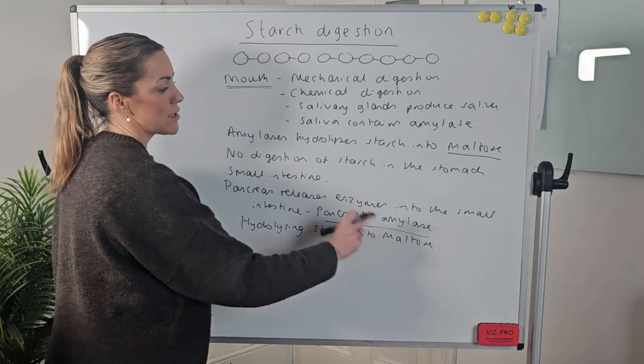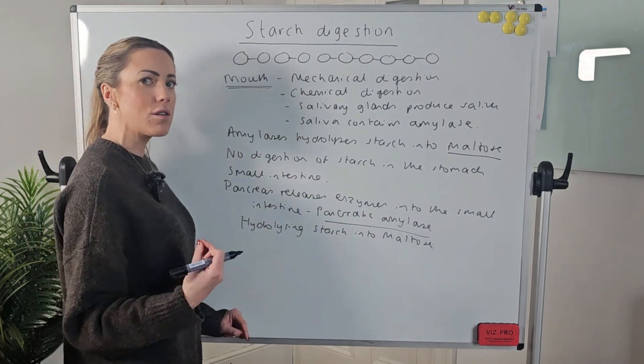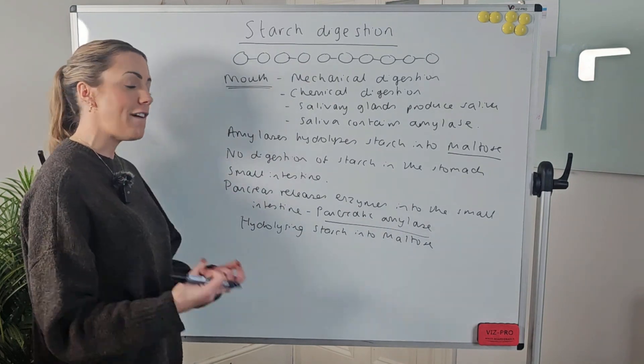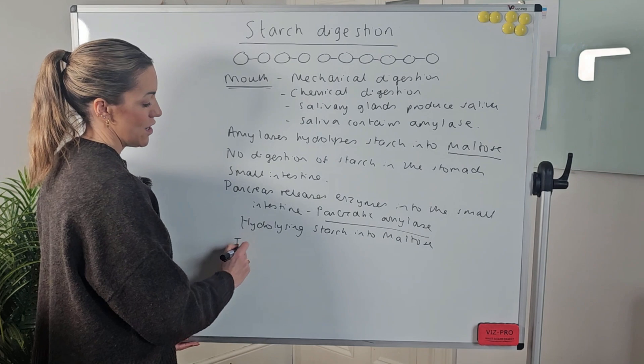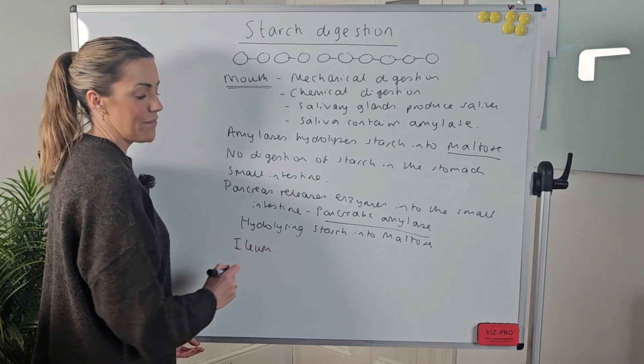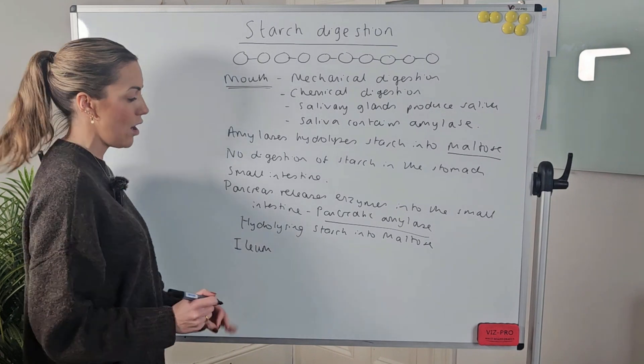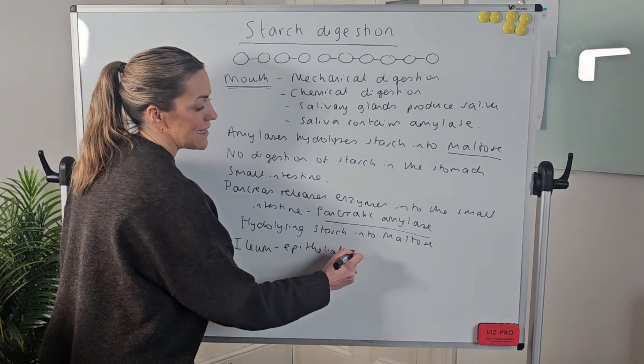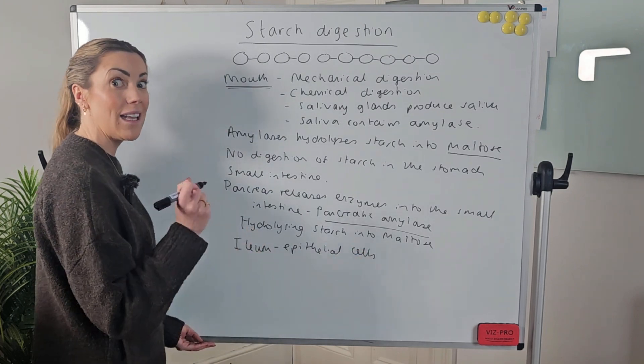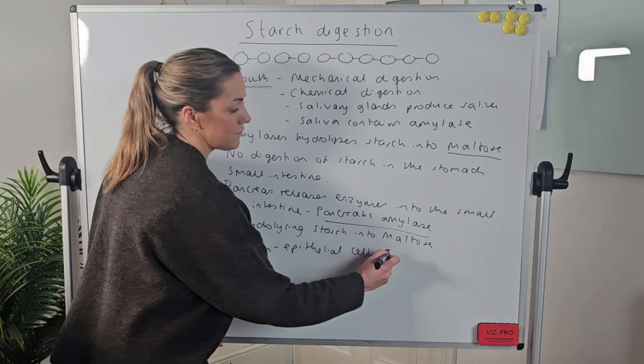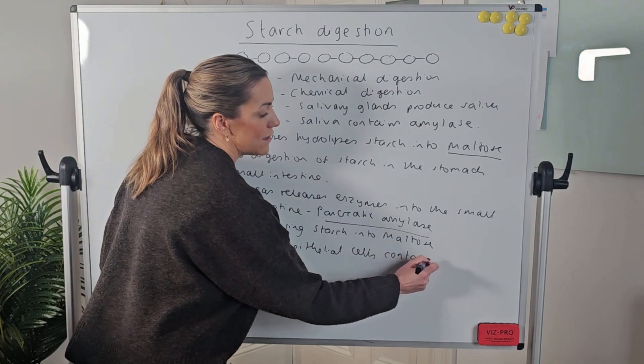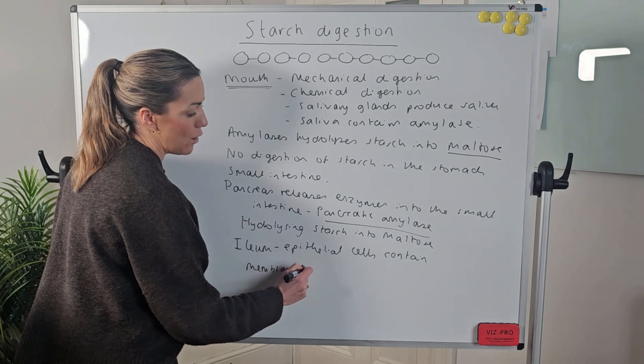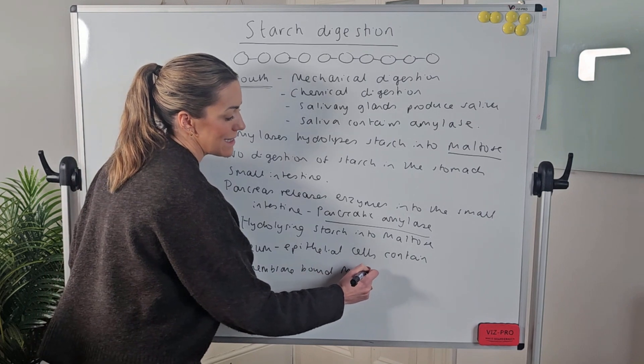But as that maltose continues along the small intestine, it's going to reach the third and final part of the small intestine, which is called the ileum. The ileum is the third and final part of the small intestine. And what's important in here is the epithelial cells that line the ileum contain membrane bound maltase.